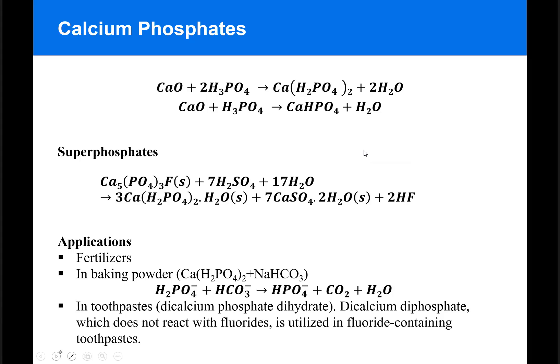Those can be produced by the reaction of the pure acid with calcium oxide to produce the calcium dihydrogen phosphate or the calcium monohydrogen phosphate based on the concentration of the acid used.